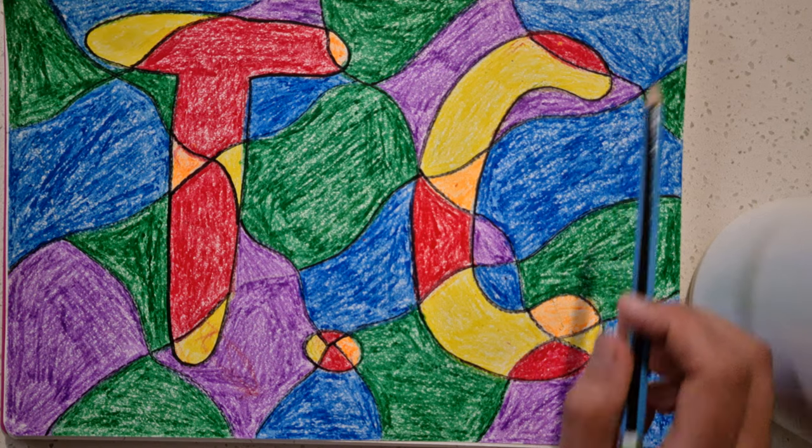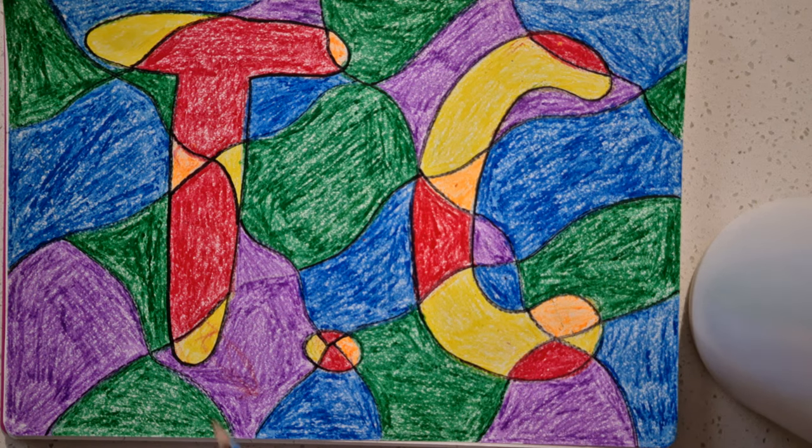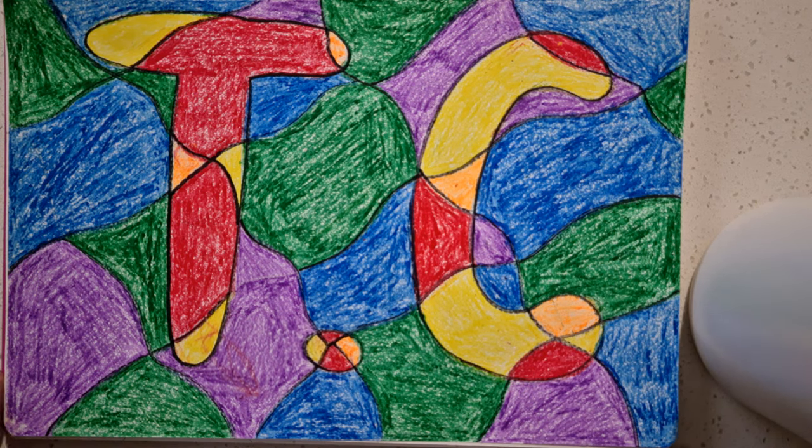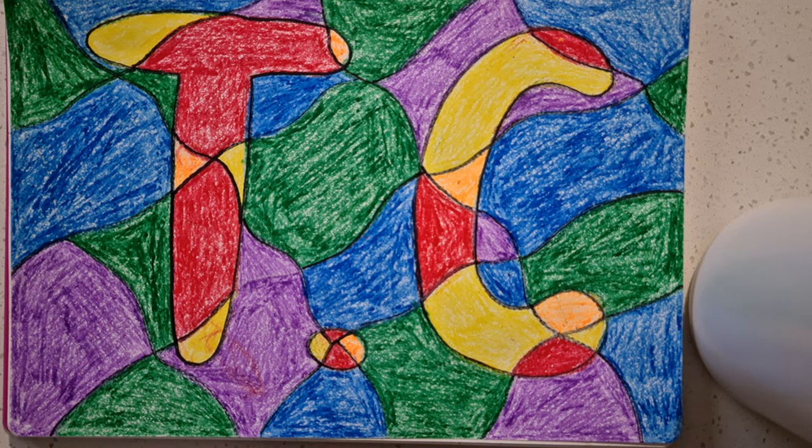When you're using your marker you are literally going over all of the lines, because you want that definition between the shapes. It creates that point of interest and it just further emphasizes all of the different colors and the initials from the background.